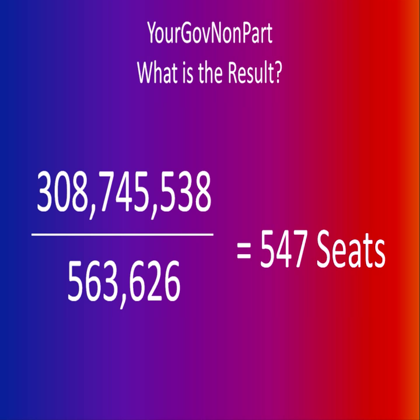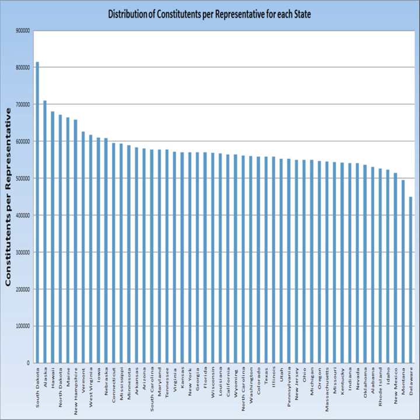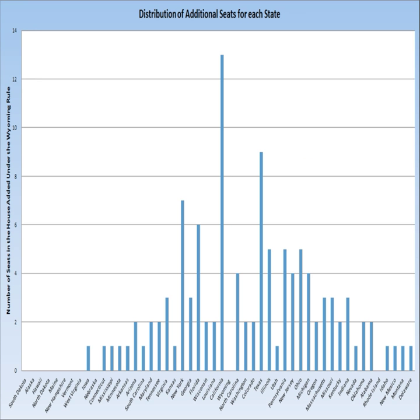This would try to normalize the distribution across the country and make each state more equally represented, with a greater say in their government and a more equal distribution in both the House of Representatives and the Electoral College. But if we look at the distribution after applying the Wyoming Rule, it looks pretty much the same. Across the middle it's still fairly even, but on the ends, South Dakota remains very underrepresented while Delaware is very highly represented. And counterintuitively, states like California — which already have the most representatives — would be the ones gaining the most.